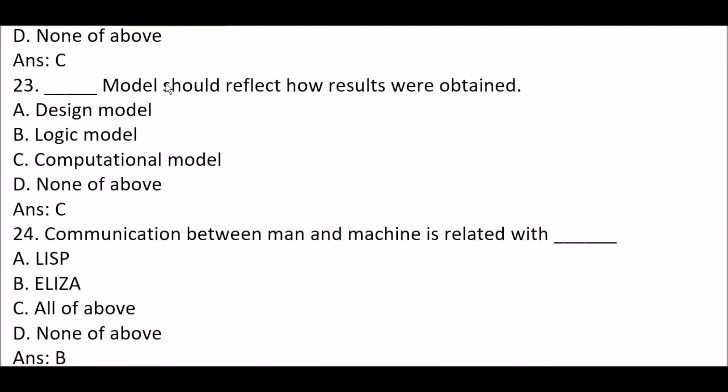Next question: blank space model should reflect how results were obtained. Option A: design model. Option B: logic model. Option C: computational model. Option D: none of the above. The right answer is Option C — a computational model should reflect how results were obtained.